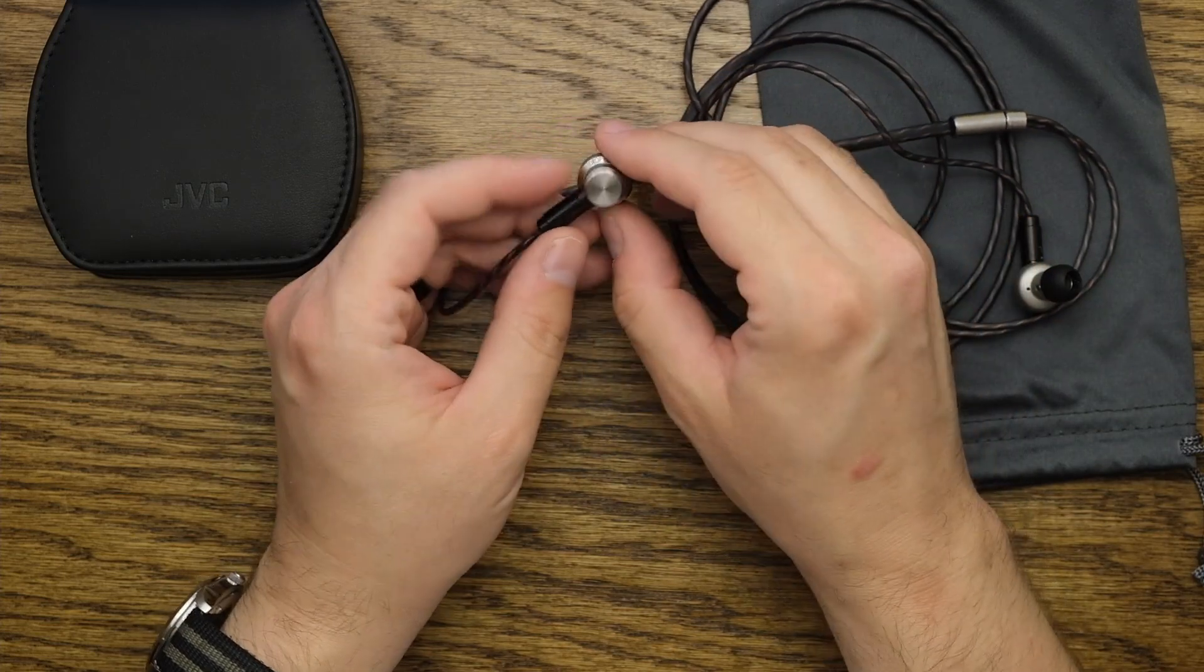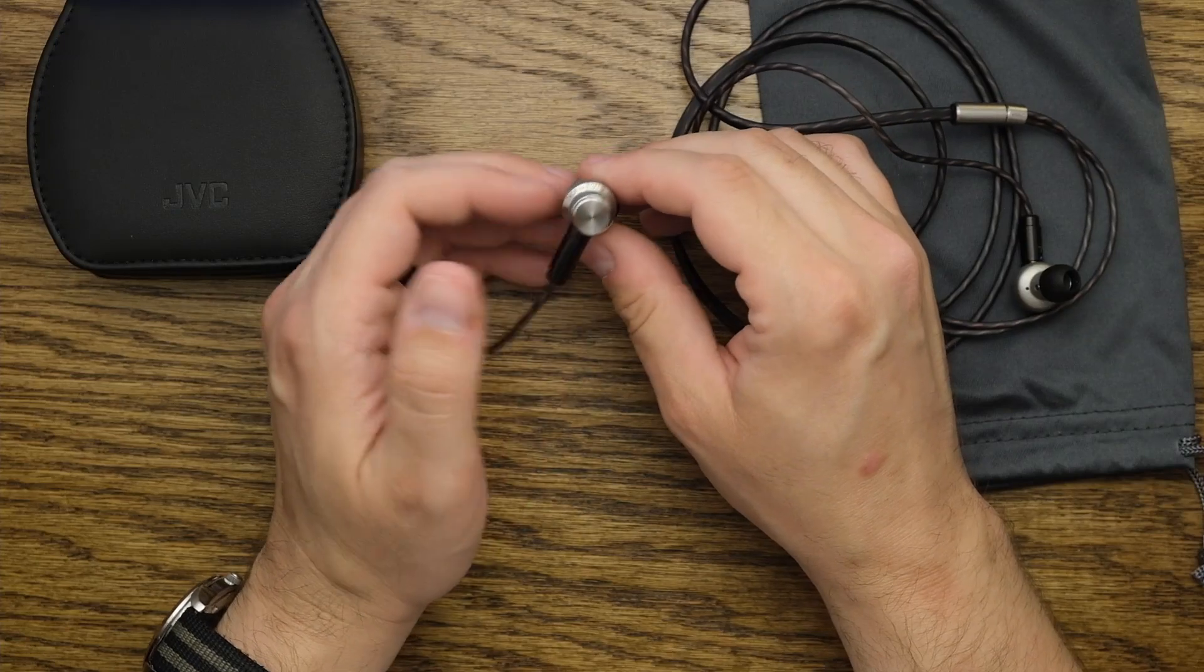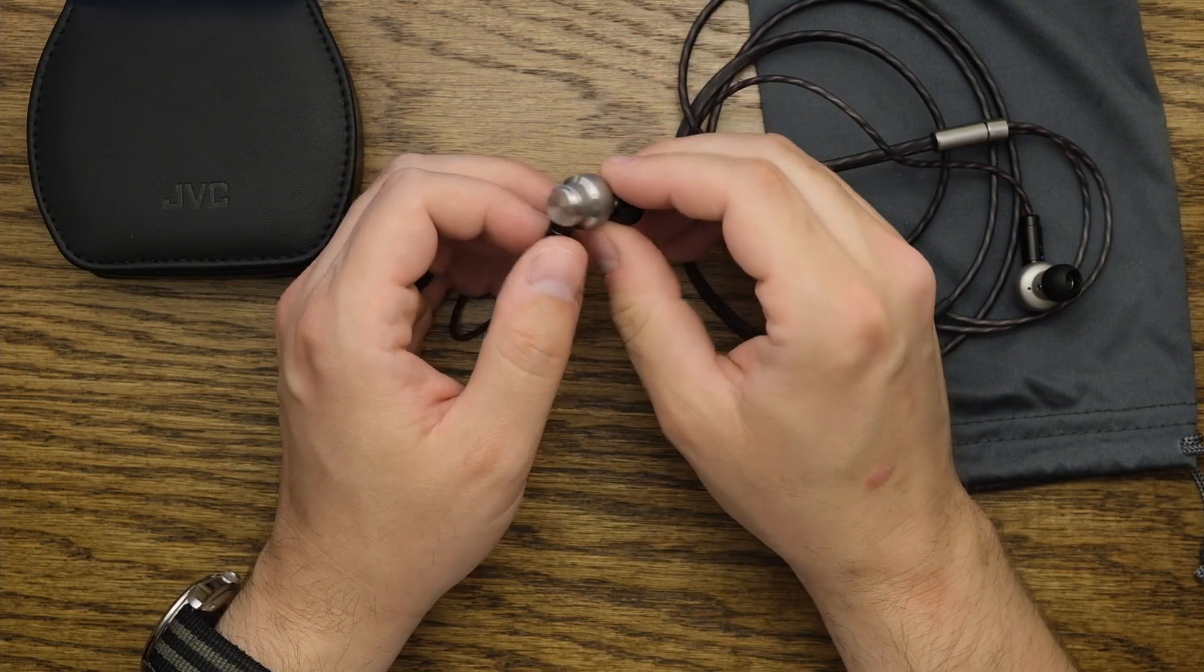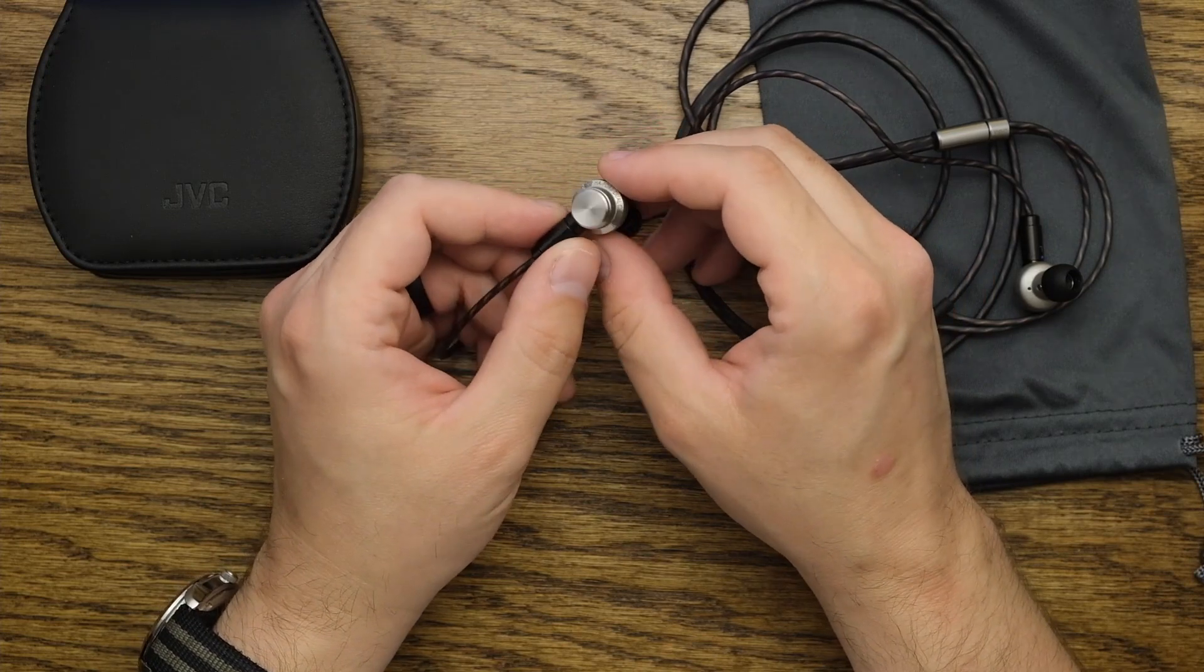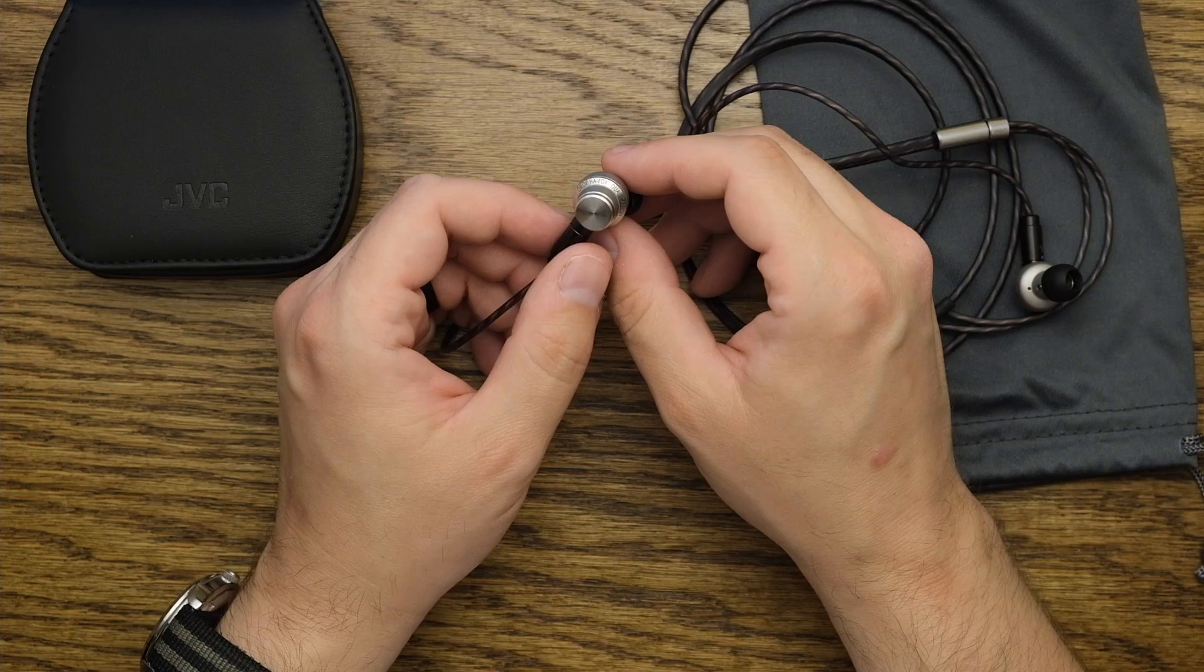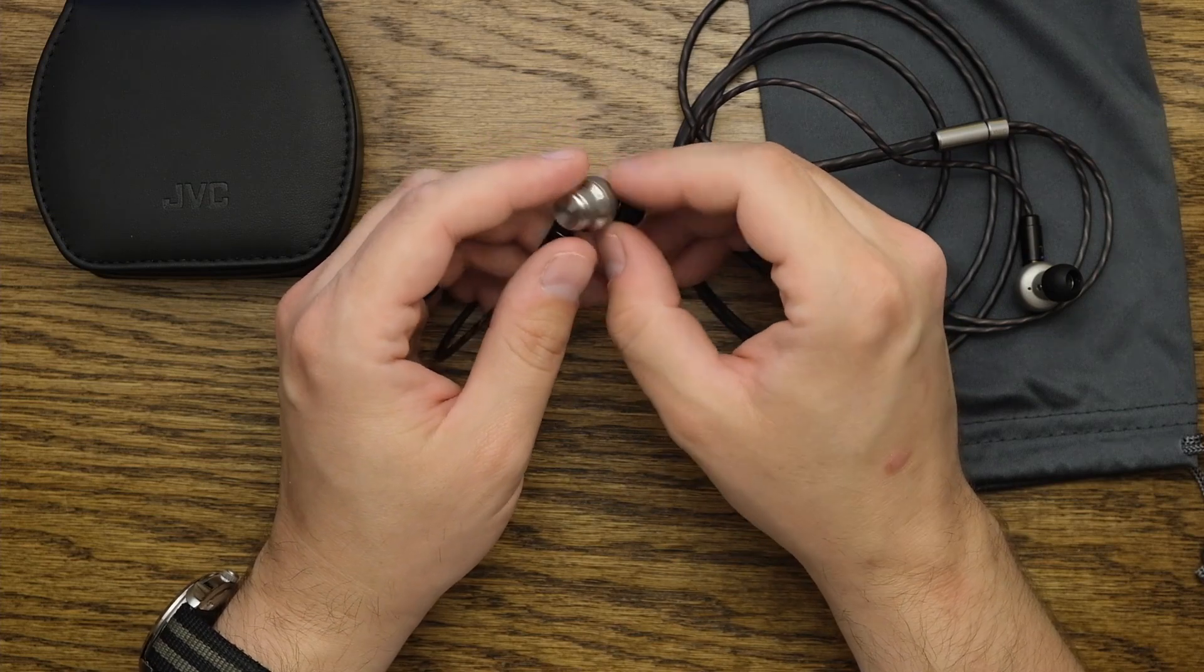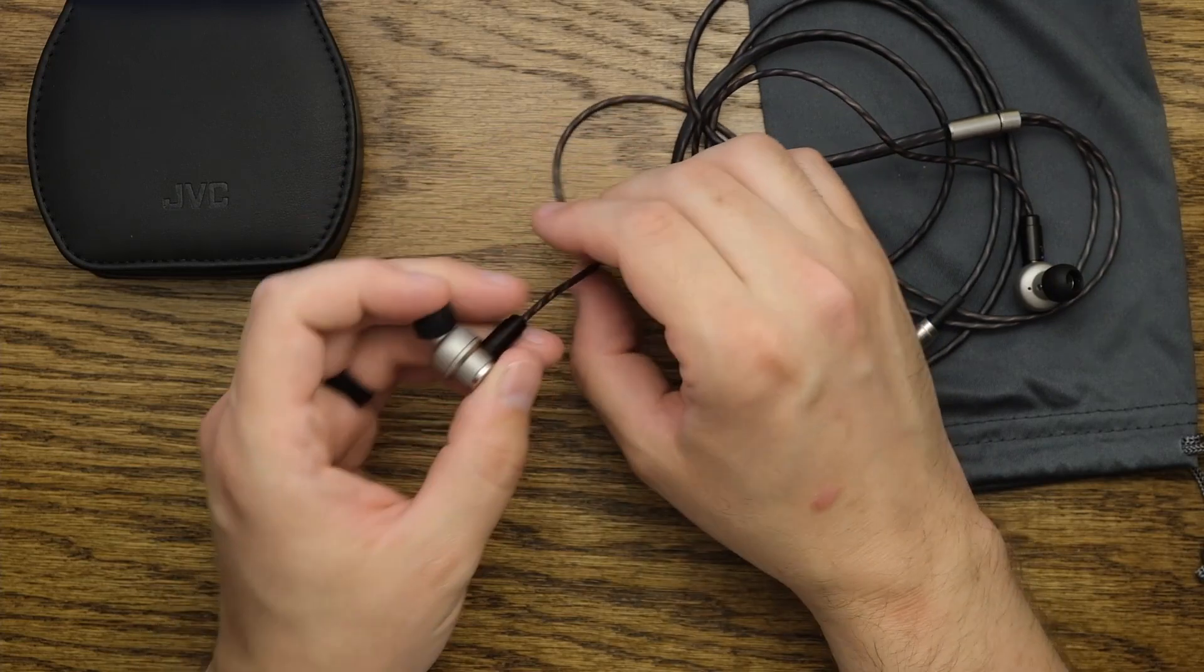So they're a single dynamic driver, and they are an 11mm driver. It's a dual carbon driver, I think is what they call it. It's got some fancy technology in there, different diamond-like carbon coating and all this stuff, but basically it's a single dynamic driver, pretty large one. It's got 16 ohms of impedance, and it has 103 decibel sensitivity, and it has 1.2 meter cable, 3.9 feet, so roughly 4 feet cable.